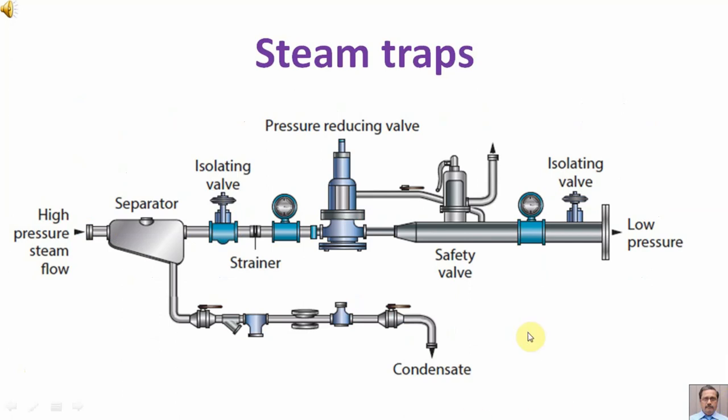In this diagram, we are showing a reducing station. It reduces high pressure steam into low pressure steam. It is having a safety valve, a pressure reducing valve, and separator. The function of the separator is to separate condensate formed in the steam line from steam.